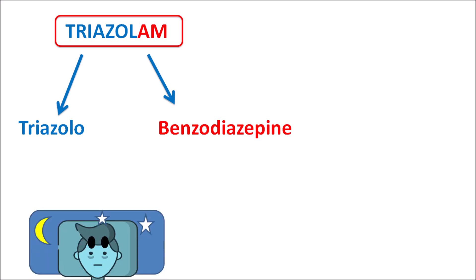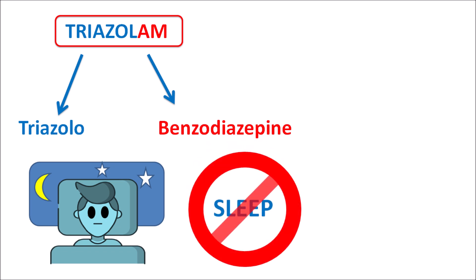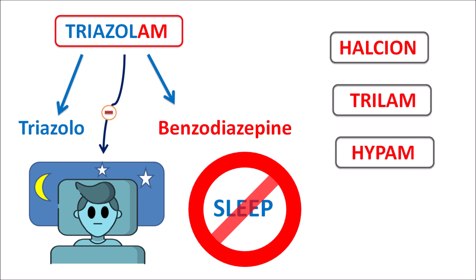This drug can be used in conditions such as insomnia, where there is lack of sleep or sleep disturbances. In such conditions, trizolam can be used as a hypnotic to reduce the symptoms of insomnia and to increase the quality and induction of sleep. This drug is available under various brand names such as Halcyon, Trilam, Hypalm, and Epotrizo.